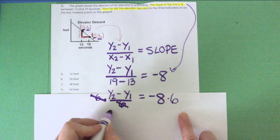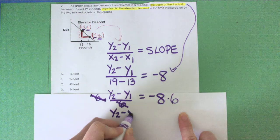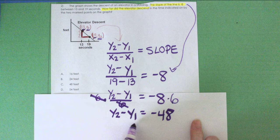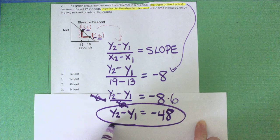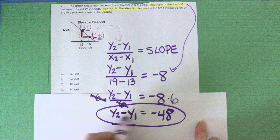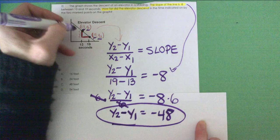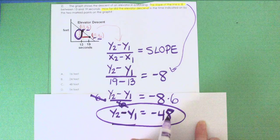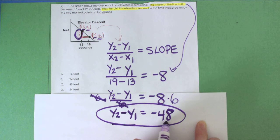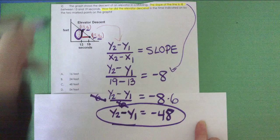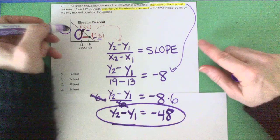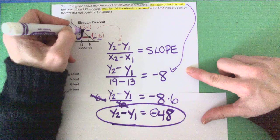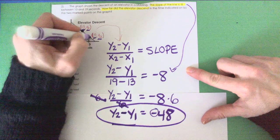This leaves me with Y sub 2 minus Y sub 1 equals negative 48. And believe it or not, my answer is right here. The difference between my Y values on this graph, which is what I was looking for, is 48 units, feet, sorry, 48 feet.